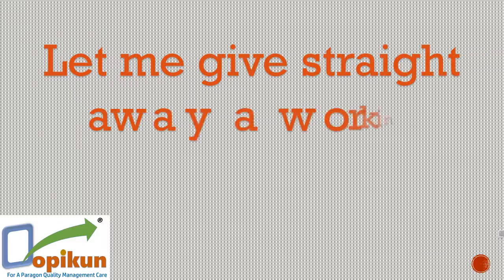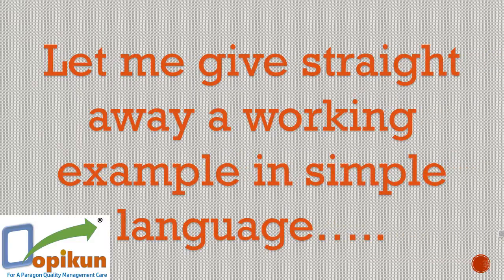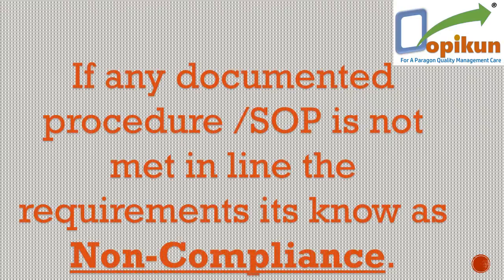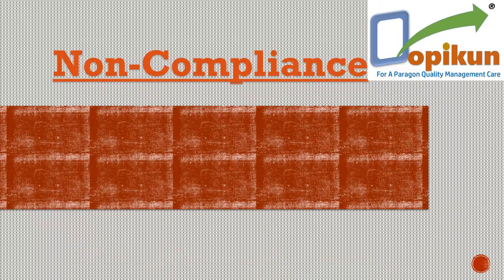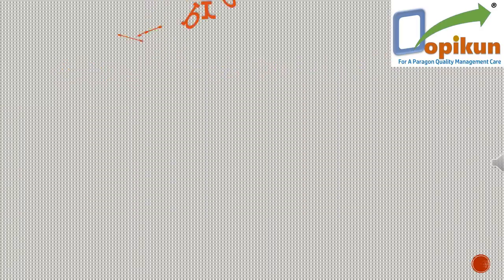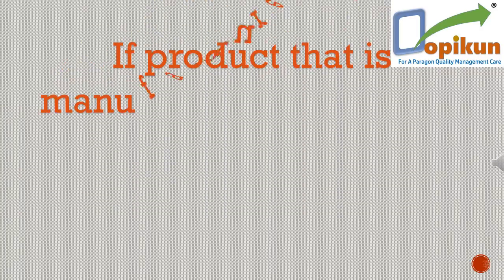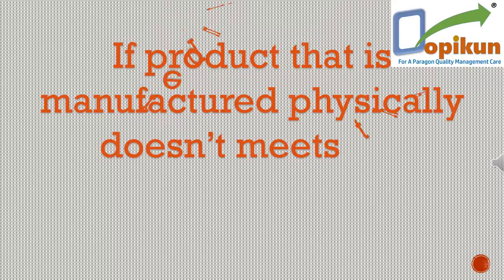Let me give straight away a working example in simple language. If any documented procedure or SOP is not met in line with the requirement, that is non-compliance. Non-compliance leads to non-conformance. If a product that is manufactured physically doesn't meet the requirements, it's non-conformance.